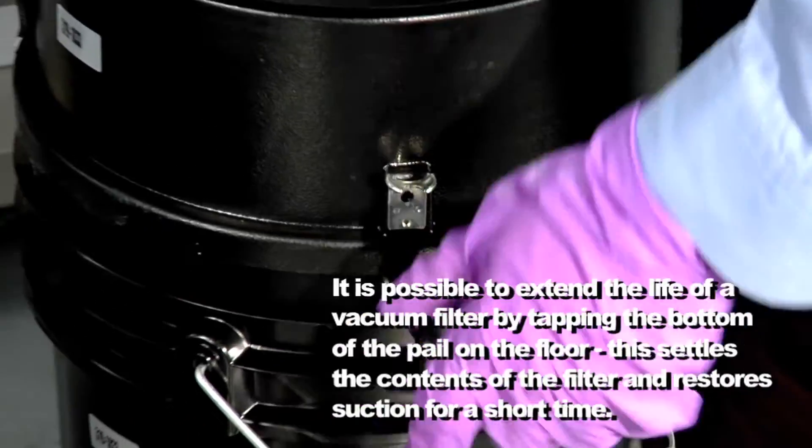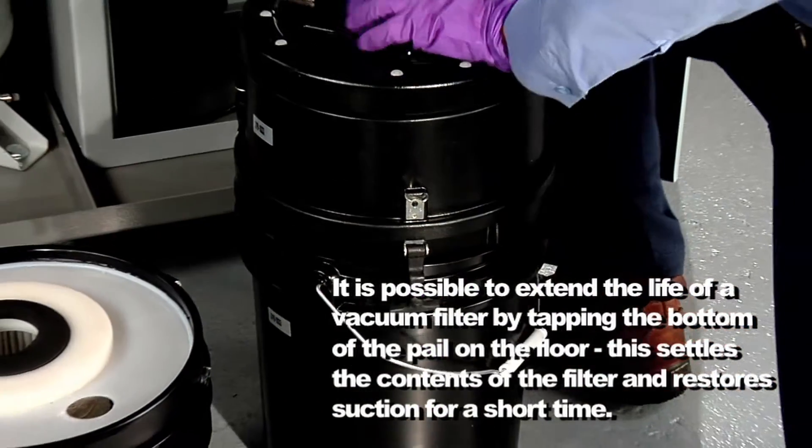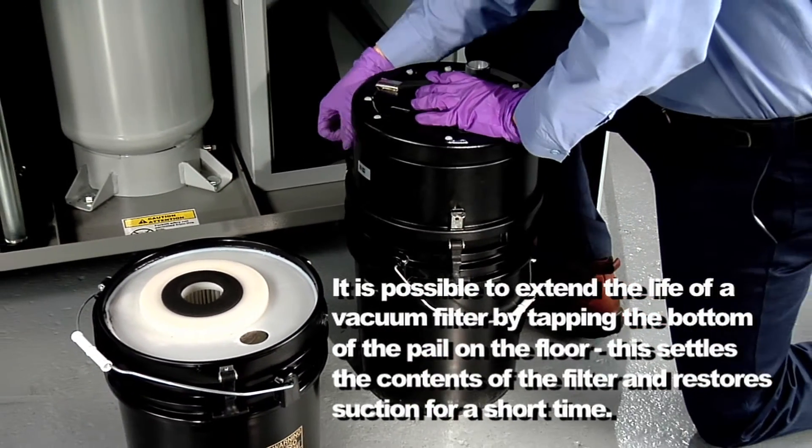Unhook the three rubber latches holding the vacuum motor to the filter pail and lift the motor off the pail.